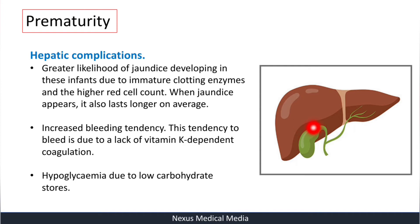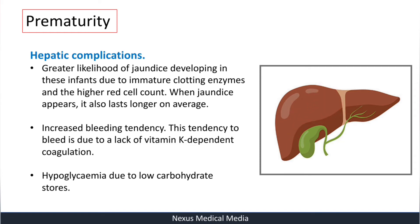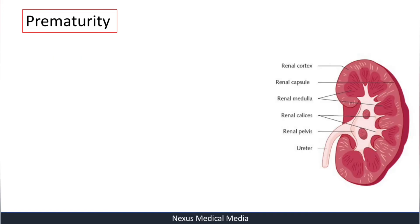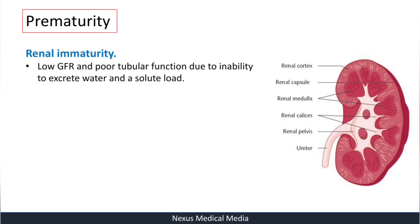Hypoglycemia occurs due to low carbohydrate stores. The main store is glycogen, stored in the liver. If that glycogen store is absent and glucose is needed, there is no source, resulting in hypoglycemia.